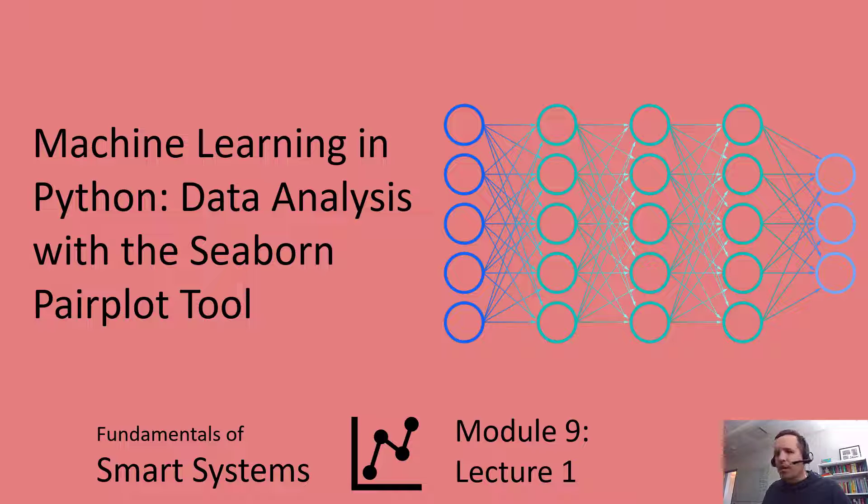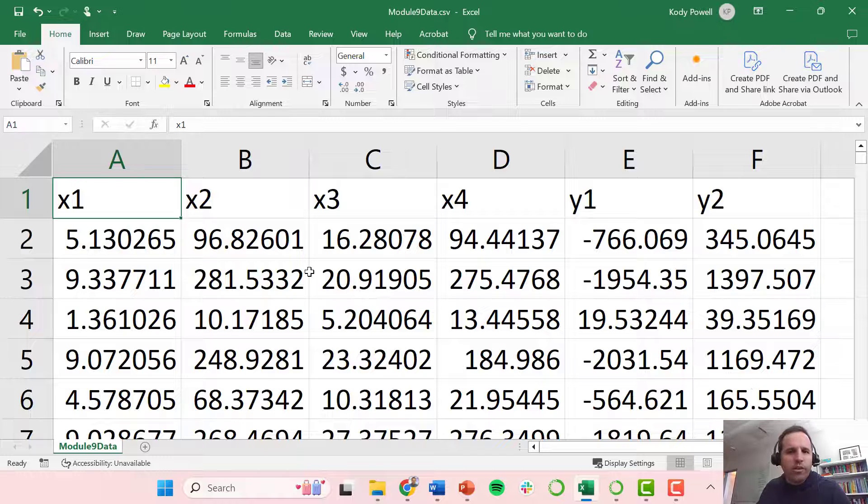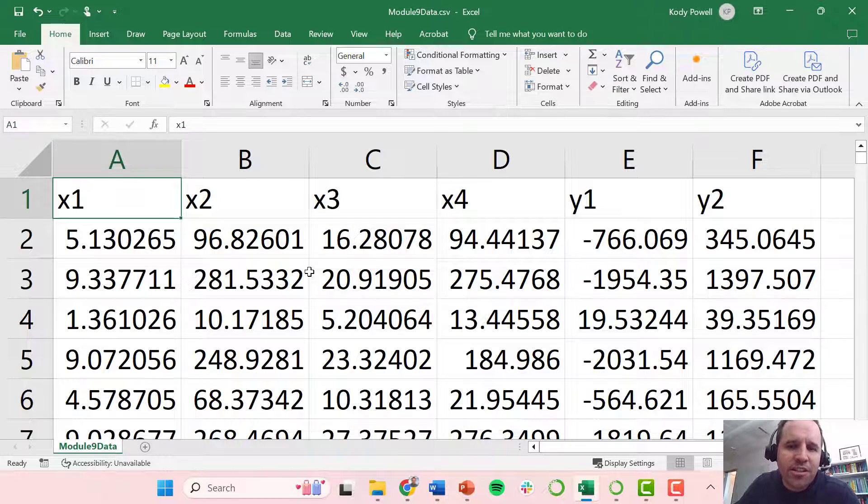So we're going to start out with generating this pair plot. The data that we'll be looking at is going to be coming from this Module9Data.csv. If you want to follow along with the video there is a link to download this same data file in the video description.